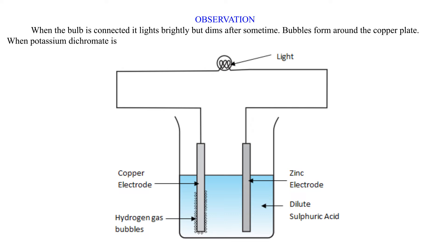When potassium dichromate is added into the container, the bubbles on the copper plate disappear and the bulb brightness is restored.